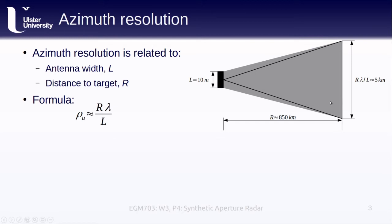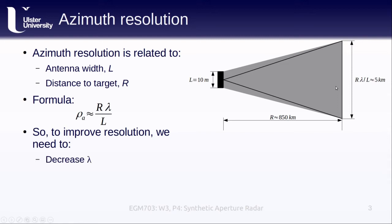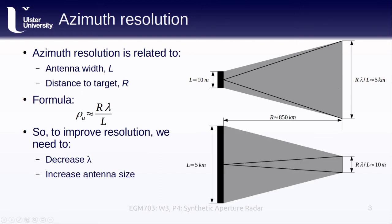If we want to improve our azimuth resolution, we either need to decrease the wavelength, which is not something we really want to do, or we need to increase the antenna size. For example, using the same R and lambda values, to get an azimuth resolution of about 10 meters, we would need an antenna that is 5 kilometers long. Hopefully it's clear why this is not a workable solution, so we'll need to think of something else.